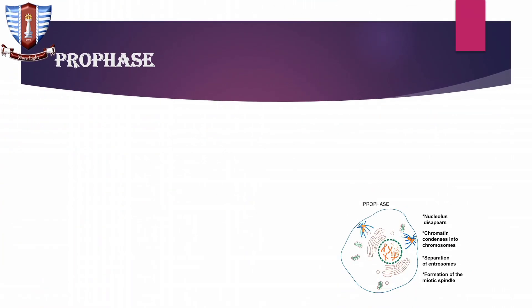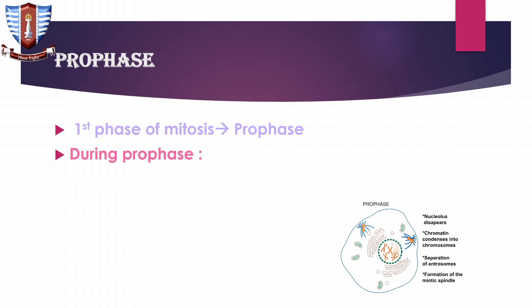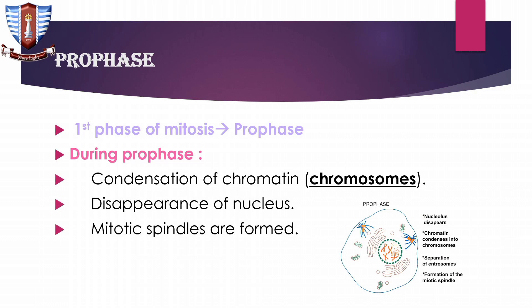Prophase is the first phase of mitosis. In prophase: first, condensation of chromatin occurs — when chromatin condenses, it becomes chromosomes. Second, the nucleolus disappears. Third, mitotic spindles are formed. In the diagram you can see the nucleus has disappeared, chromatin has condensed into chromosomes, and centrioles have moved apart with mitotic spindles forming between them.